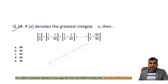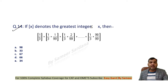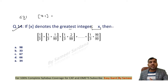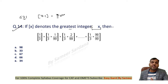Question number 14 is a greatest integer function question. It says the greatest integer function denotes the greatest integer less than or equal to x. Everyone should know the basic definition: if x = 3.1, the greatest integer less than or equal to 3.1 is 3, so the output is 3. Now in this expression we have the greatest integer function applied outside these fractions.